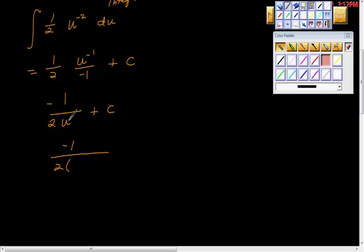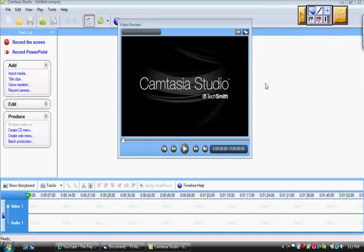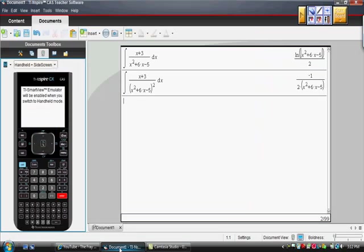And now I'm going to just re-substitute so we get negative 1 over 2. Remember, we're going to re-substitute for u. And u was x squared plus 6x minus 5, right? Plus c. So, that should be a good answer there. We can take a quick peek if you want to. I actually went back and took my math here. And lo and behold, there it is when we did it on the calculator.